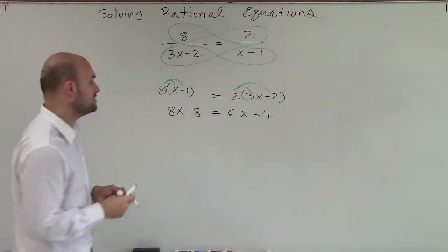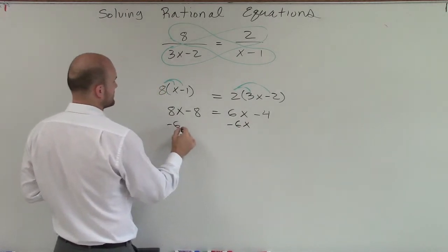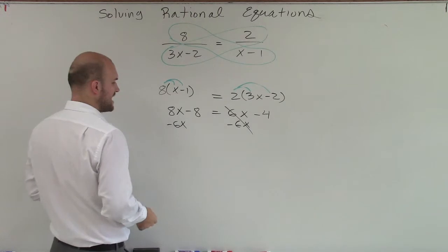Now I have a variable on both sides, so I need to combine them to the same side. I'll subtract 6x. That adds to 0. Therefore, I'm left with 2x - 8 equals -4.